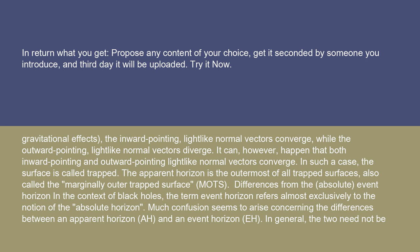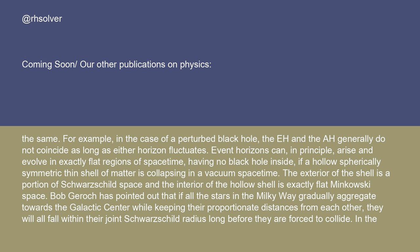In the context of black holes, the term event horizon refers almost exclusively to the notion of the absolute horizon. Much confusion seems to arise concerning the differences between an apparent horizon (AH) and an event horizon (EH). In general, the two need not be the same. For example, in the case of a perturbed black hole, the EH and the AH generally do not coincide as long as either horizon fluctuates. Event horizons can, in principle, arise and evolve in exactly flat regions of space-time, having no black hole inside, if a hollow, spherically symmetric thin shell of matter is collapsing in a vacuum space-time.